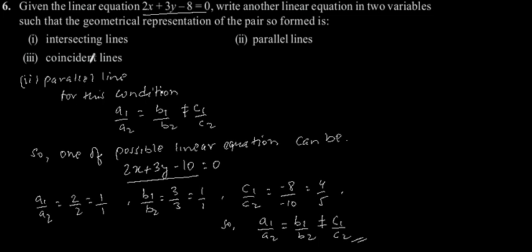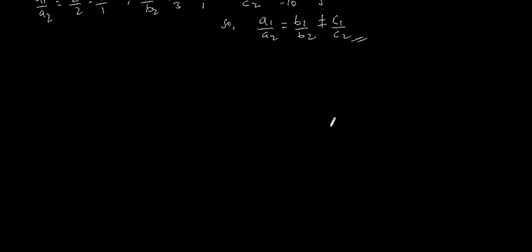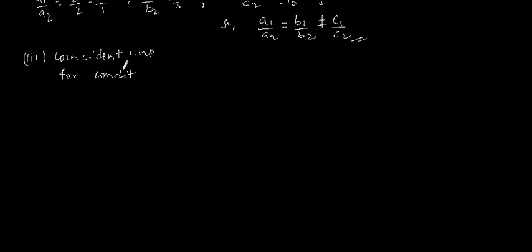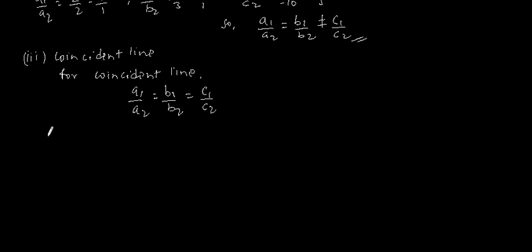Now the third case: coincident lines. For coincident lines, the condition will be a1 by a2 is equal to b1 by b2 is equal to c1 by c2.